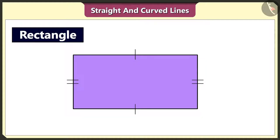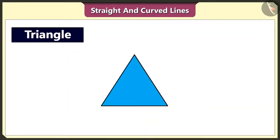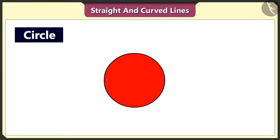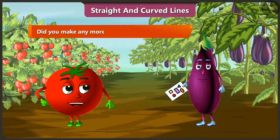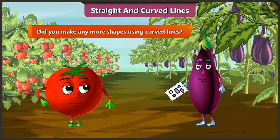Yes, you are right. I never thought of that. Look, this triangle is also made using three straight lines. Yes. And this circle is made using a curved line.